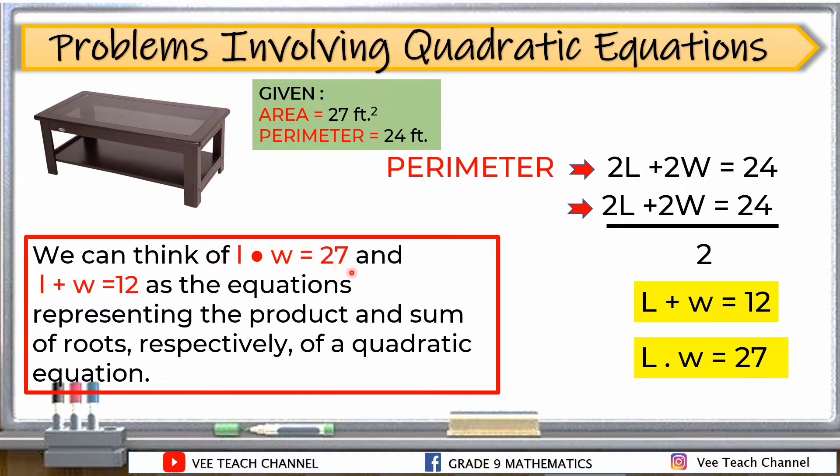Na-simplify na natin yung ating perimeter. Length plus width is equal to 12. Sa given natin, length times width is equal to 27. Now, we can think of length times width is equal to 27 and length plus width is equal to 12 as the equations representing the product and the sum of roots respectively of a quadratic equation. Yung L plus W is equal to 12, ayan yung ating sum. And then, ito namang length times W is equal to 27, ayan naman yung ating product of the roots.